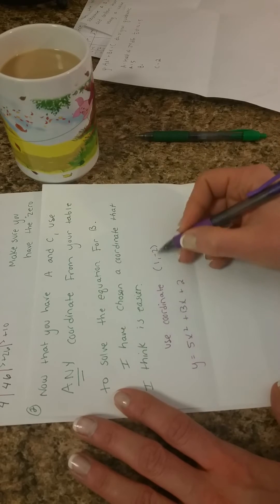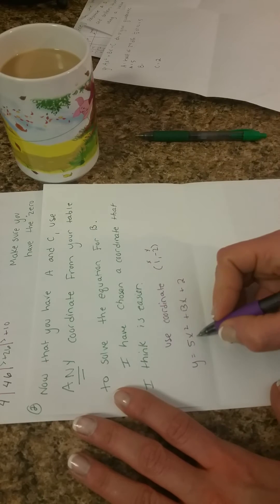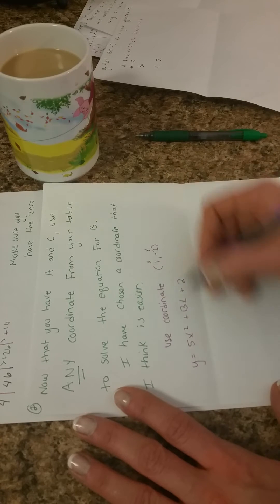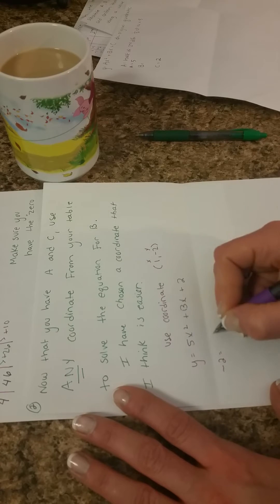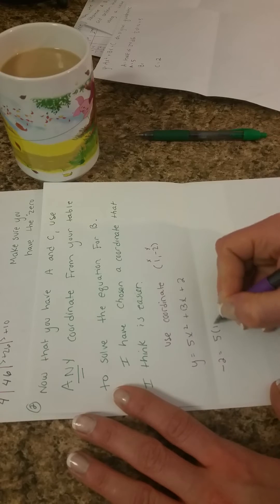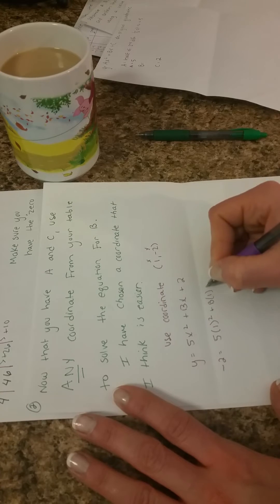So what I'm solving, I'm going to substitute 1. This is my x value and that's my y value. Substitute 1 in for x and negative 2 in for y. So we have negative 2 equals 5 times 1 squared plus B times 1 plus 2.